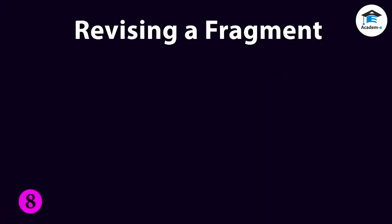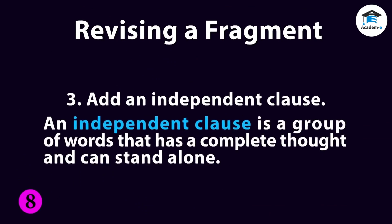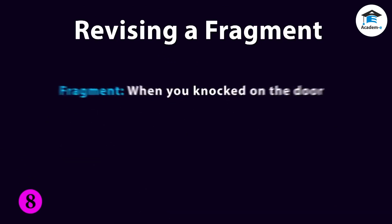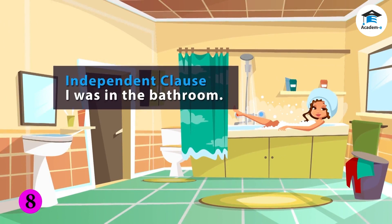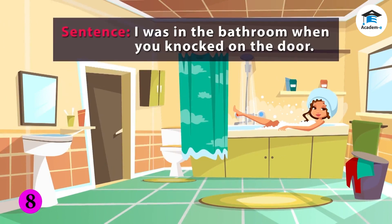The third way is by adding an independent clause. An independent clause is a group of words that has a complete thought and can stand alone. 'When you knocked on the door' is a dependent clause — it has a subject and a predicate, but does not express a complete thought. So, to make it a sentence, add the independent clause 'I was in the bathroom.' It now reads: 'I was in the bathroom when you knocked on the door,' which is now a sentence.